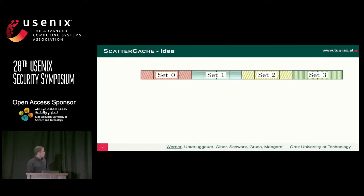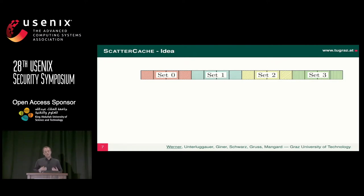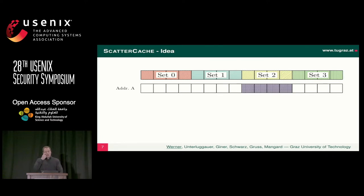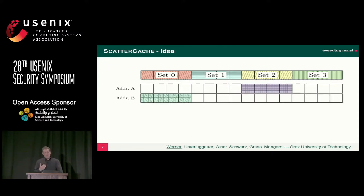In Scatter Cache, we try to get rid of this problem. We look at a graphical view of how caches work. In this example, we have a small cache consisting of 16 cache lines, four-way set-associative, so we have four sets. In a traditional cache, the attacker knows exactly what addresses he has to access to get access to certain cache sets. The first idea is to remove this direct link — to get rid of the direct mapping from index bits to cache sets and just scramble them.